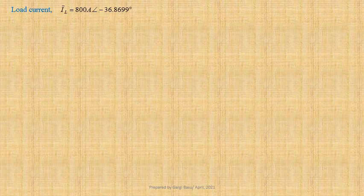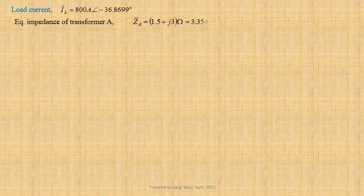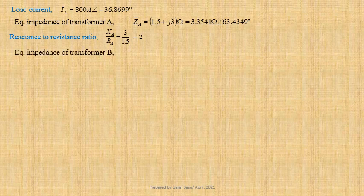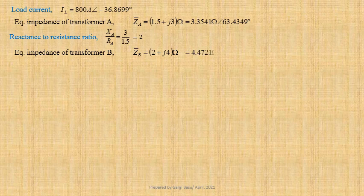Given load current IL equals 800 ampere at an angle minus 36.8699 degree. Equivalent impedance of transformer A, ZA equals 1.5 plus J3 ohm, that is equal to 3.3541 ohm at an angle 63.4349 degree. Reactance to resistance ratio XA by RA equals 3 by 1.5, that is equal to 2. Let us assume that equivalent impedance of transformer B, ZB equals 2 plus J4 ohm, that is equal to 4.4721 ohm at an angle 63.4349 degree.